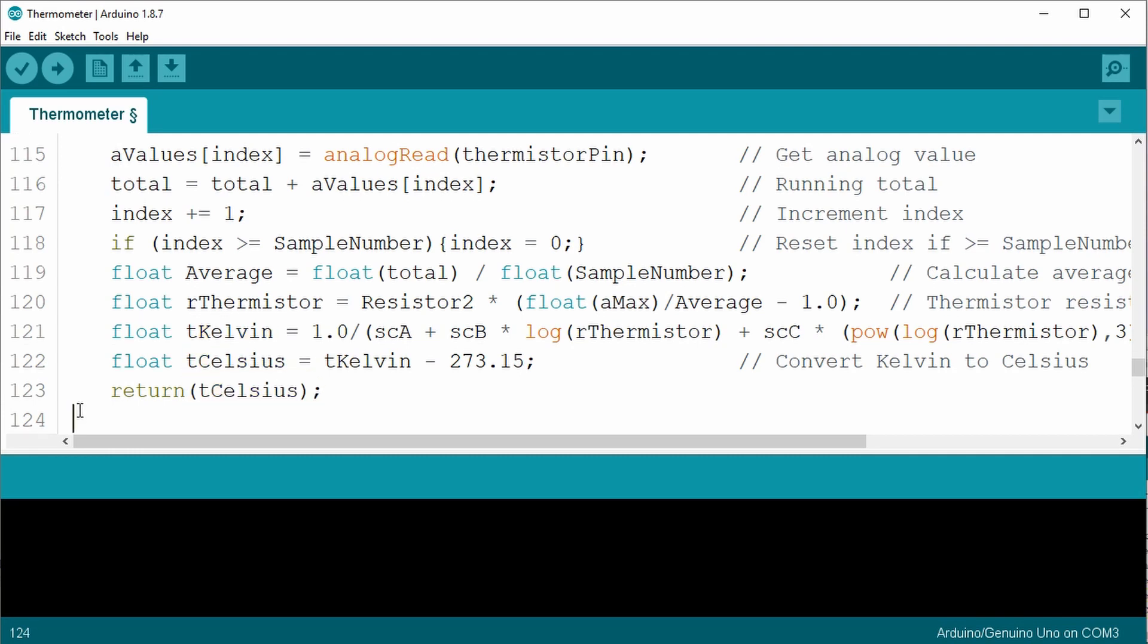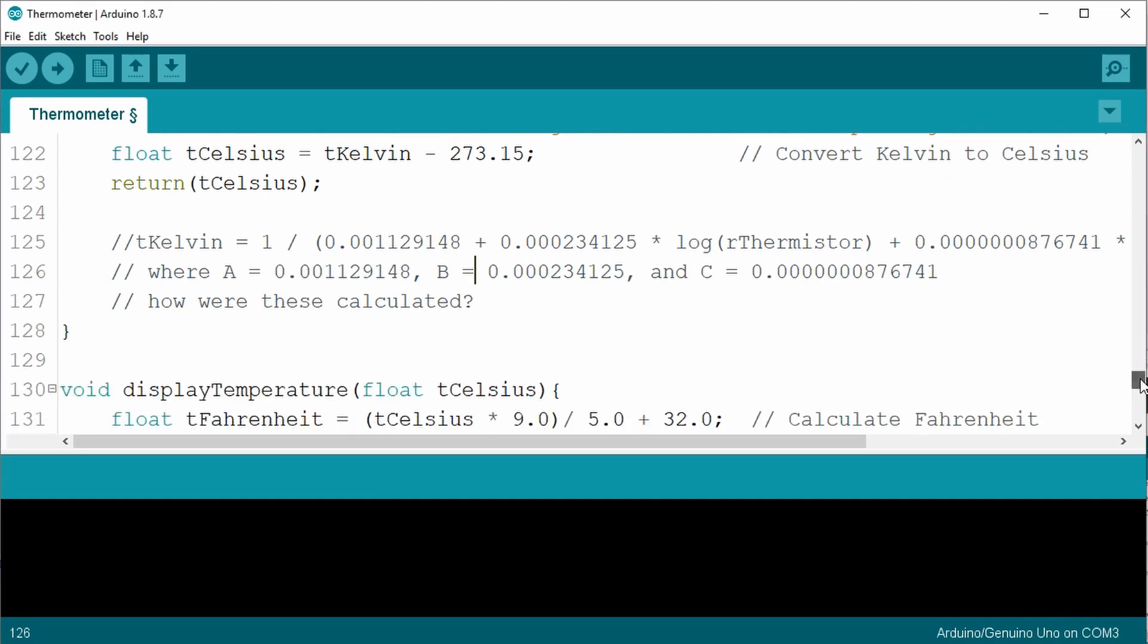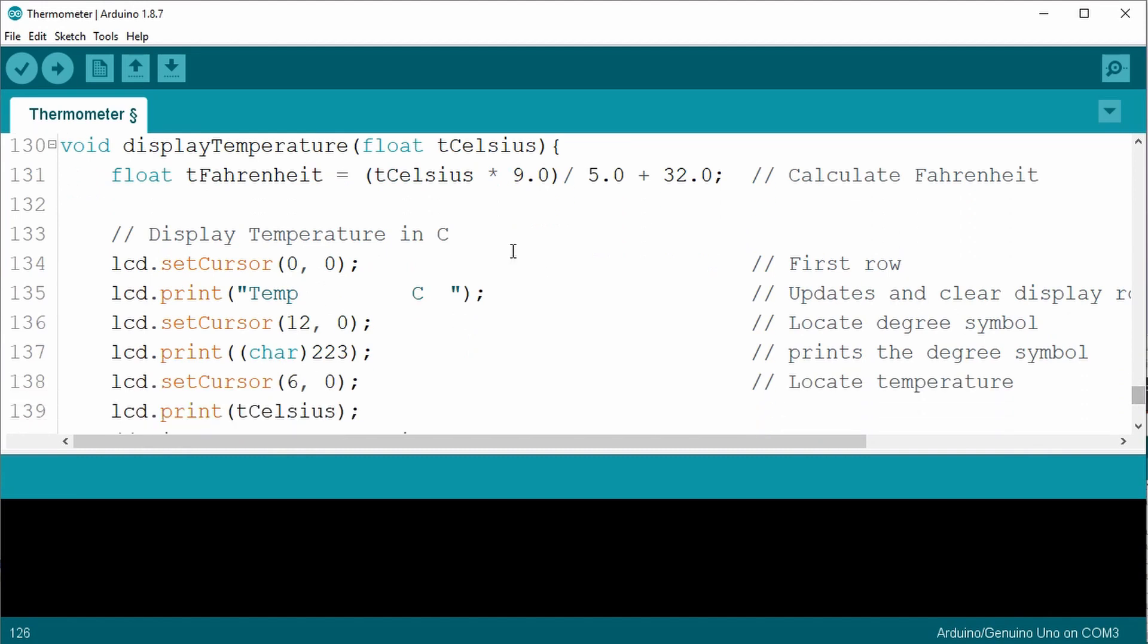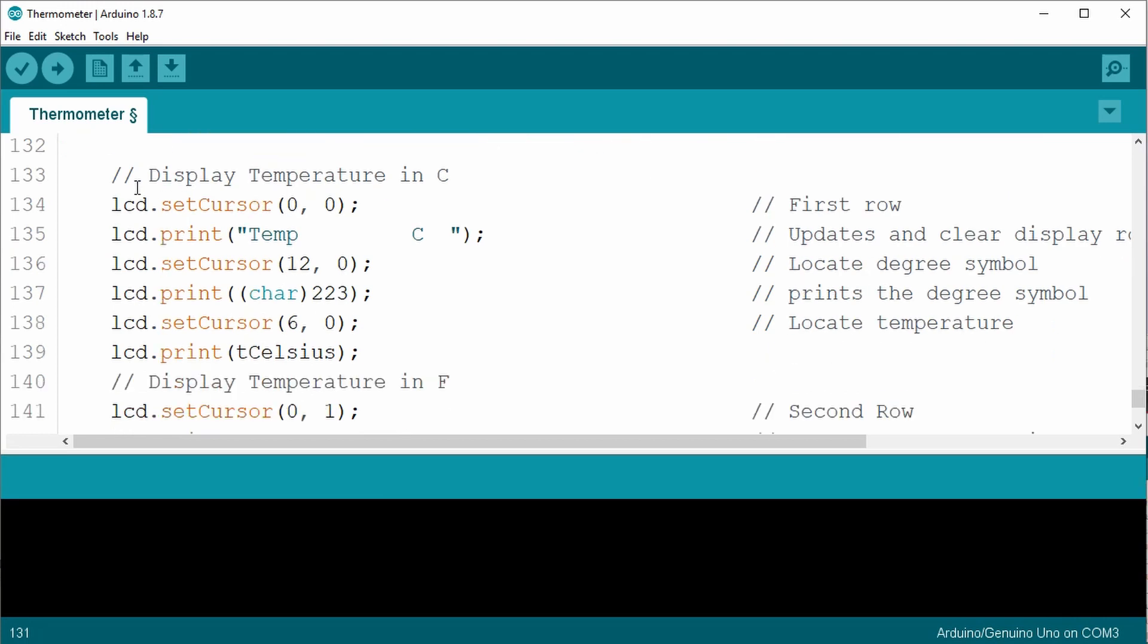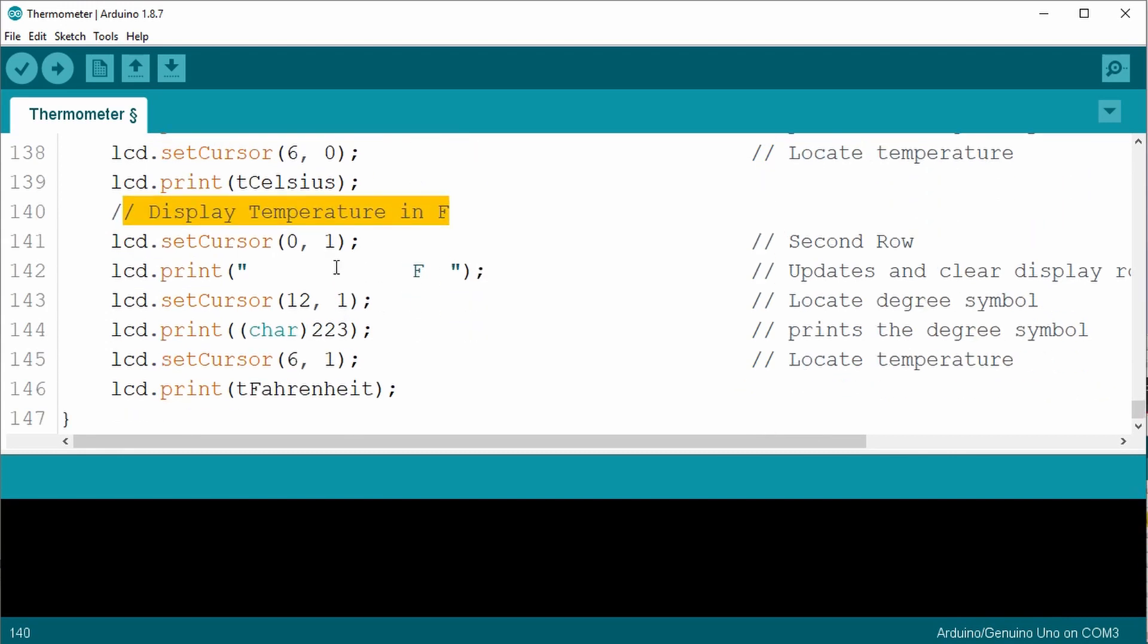The commented lines here are the equation and values provided by the tutorial. Perhaps they were calculated based on measured values, but I couldn't confirm them, so I just included here as a reference. The display temperature function takes the temperature value in Celsius and converts it to Fahrenheit. Then it prints the Celsius in the first row and Fahrenheit on the second. That's it. Super simple. So let's upload the code and check it out.